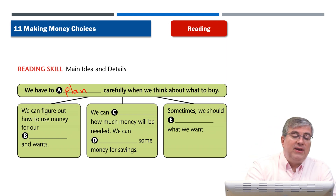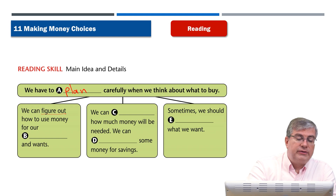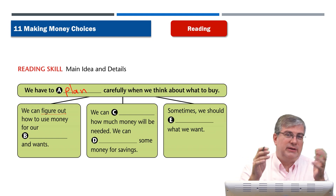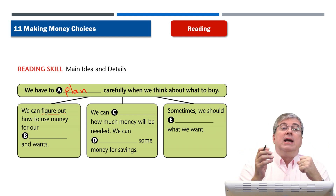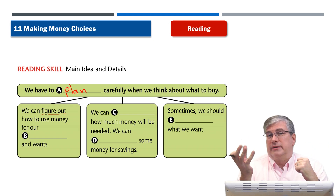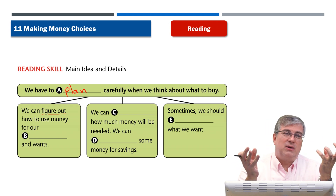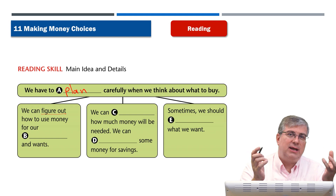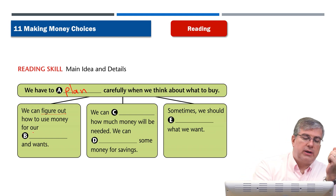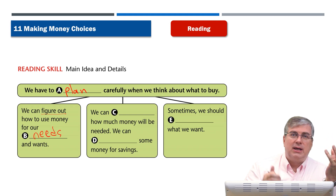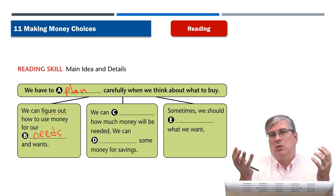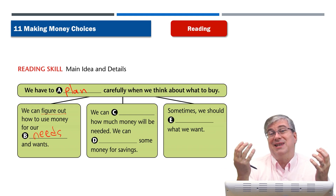We can figure out how to use money for our needs and wants. We have wants — what we want to buy. But we also have the things we absolutely have to have in order to live, and those things are our needs. So we can think about needs: what do we have to have? And wants: what would be nice to have, but we don't really need it?